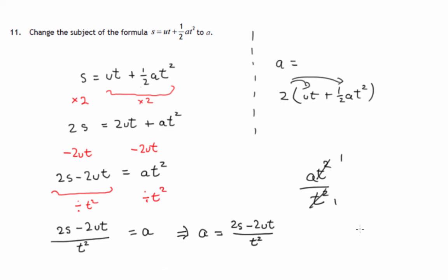Now there are other ways of doing this. We could have subtracted UT initially, and then doubled both sides. Possibly we might have kept brackets in there, and then divided by T squared. So we would have got A equals 2 lots of S minus UT over T squared.